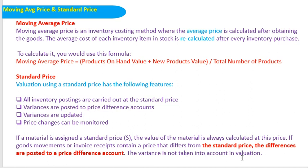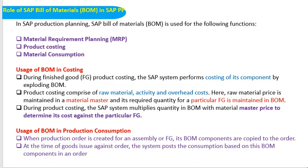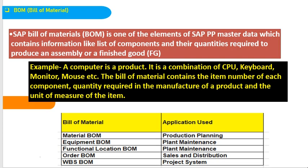This covers the difference between moving average price and standard price, including some scenarios. In the last session I explained about the bill of materials, and one more session covered routing and work centers — these are completely master data. In PP module there are three types of master data: bill of material, routing, and work centers. I will be explaining these topics in the next sessions. Thank you so much for the support — this is Chani SK signing off.